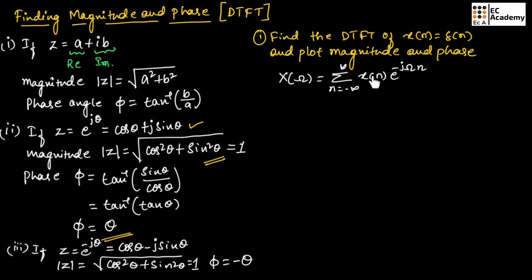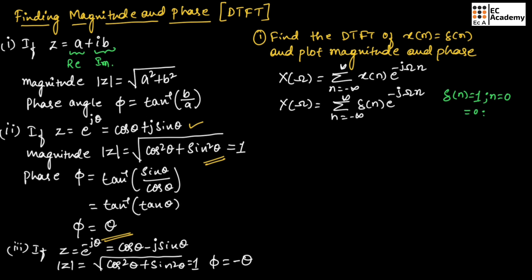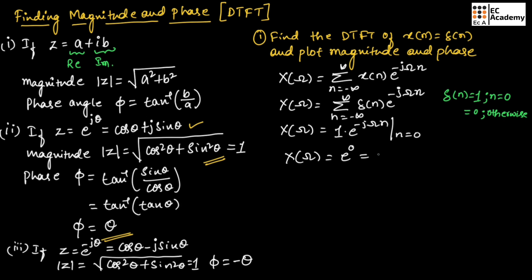Now in place of x(n), let us substitute δ(n). So X(ω) = Σ (n = −∞ to ∞) δ(n) e^(−jωn). We know δ(n) = 1 for n = 0 and δ(n) = 0 for other values of n. So X(ω) = 1 × e^(−jωn) for n = 0, which gives X(ω) = e^0 = 1.